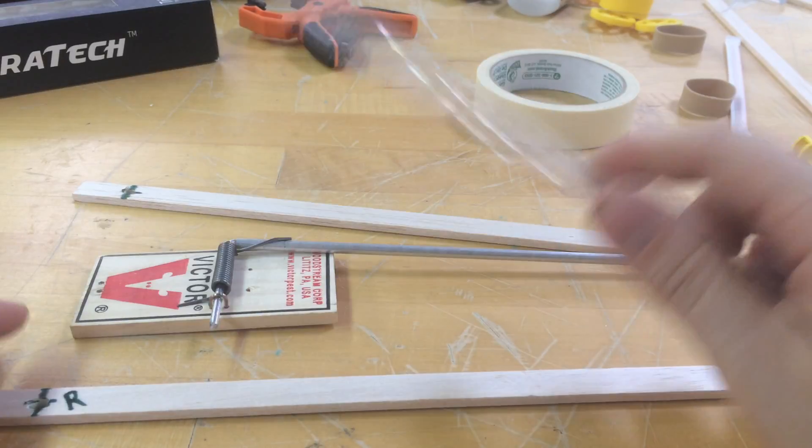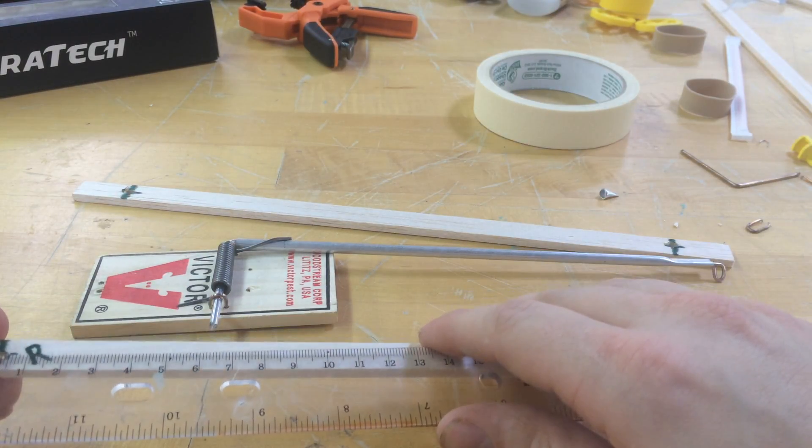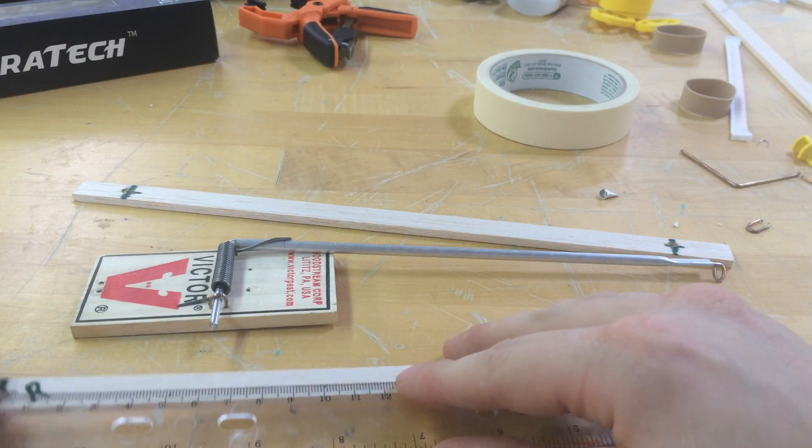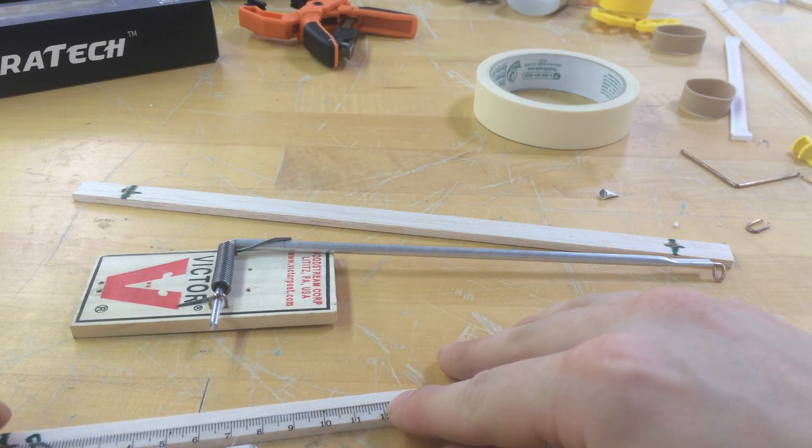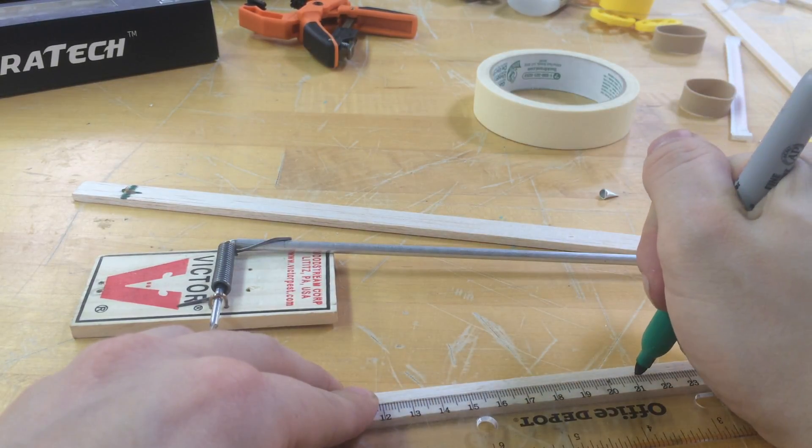So we're going to take our ruler, we're going to measure out 21.2 from the rear axle. And we're going to make that mark. 21.2 from the rear axle, make that mark.